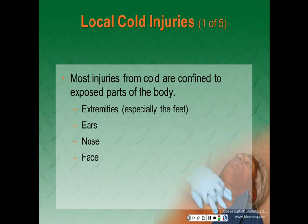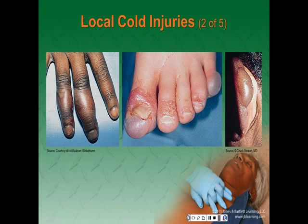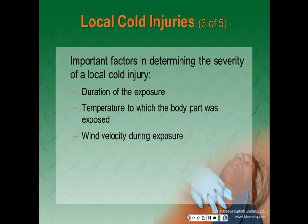Most injuries from cold are confined to exposed parts of the body — extremities, especially the feet, ears, nose, and face. When exposed parts become very cold but not frozen, the condition is called frostnip, chillblains, or immersion foot or trench foot. When the parts become frozen, it's called frostbite. Important factors in determining severity of a local cold injury include how long the exposure was, the temperature at which the body part was exposed, and the wind velocity during exposure. You should also investigate underlying factors such as wet conditions, inadequate insulation, and restricted circulation from tight clothing or circulatory disease.